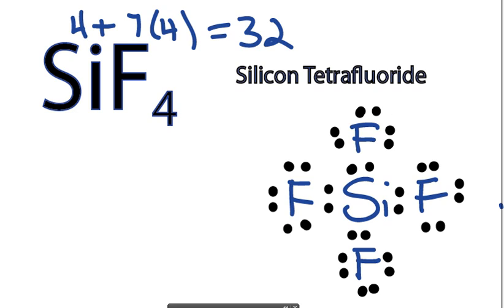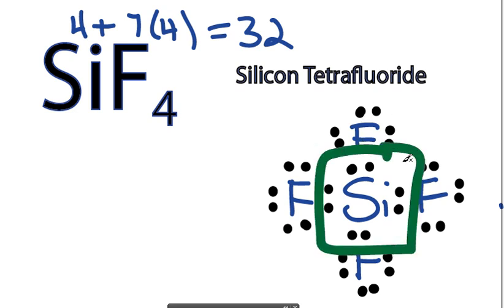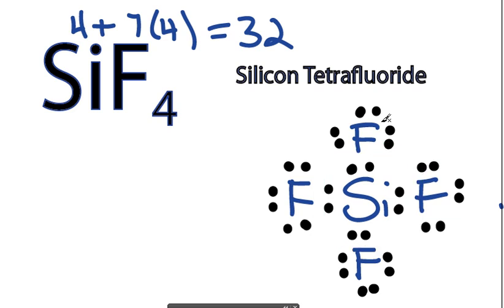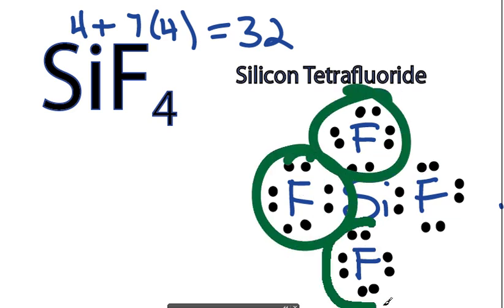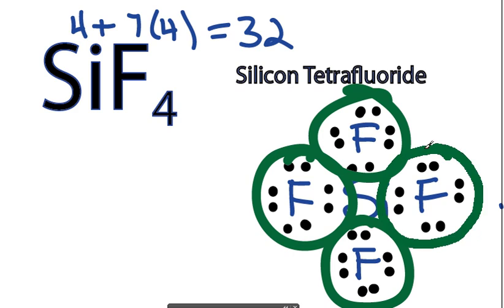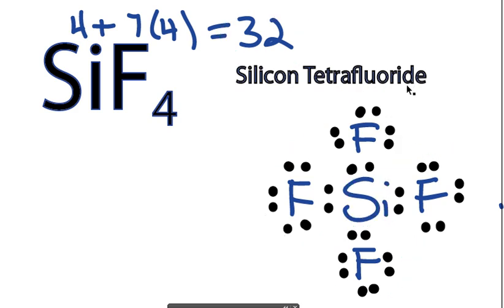Let's see if we have octets. So in the center, silicon has 8 valence electrons, that's an octet, and then each of the fluorines on the outside has 8 as well. So those octets are satisfied, and we've used 32 valence electrons that we had available. So that is the Lewis structure for SiF4.